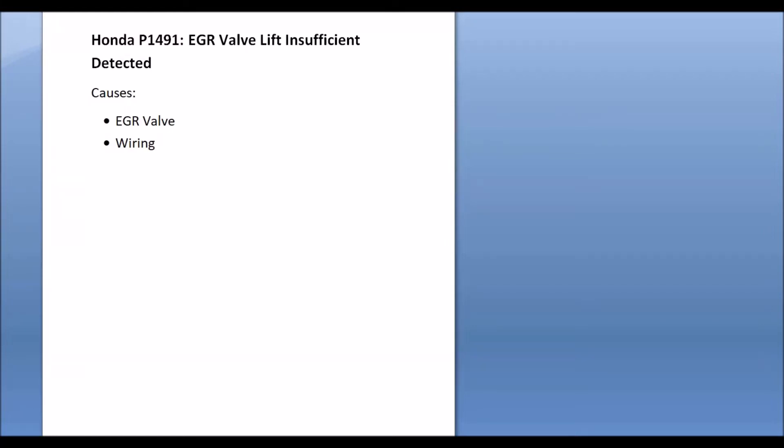So today I'm talking about a Honda with the P1491 code. What it is and how you can go about fixing it. So what is a Honda P1491? Well, it's an EGR valve lift insufficient detected.